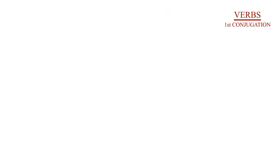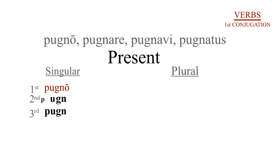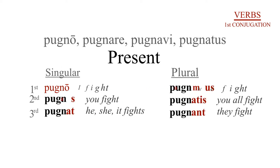And here's what the present would look like, starting with the first person singular: pugno, I fight. Second person singular: pugnas, you fight. Third person singular: pugnat, he, she, or it fights. First person plural: pugnamus, we fight. Second person plural: pugnatis, you all fight. Third person plural: pugnant, they fight.